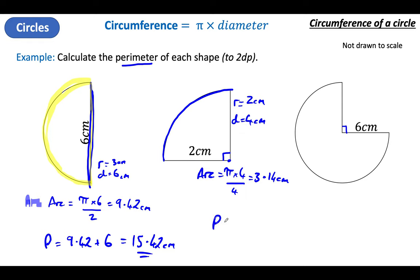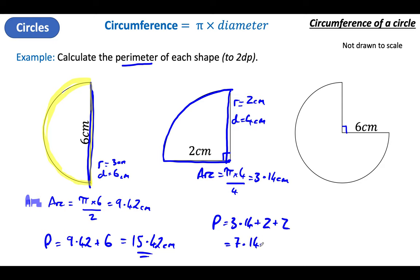My perimeter will be the arc plus the two flat bits — I need to add 2 and another 2. When I add those together, I get 7.14 centimeters. That is my perimeter — the arc and the two flat bits. I know this can be a little bit tricky, but let's try and get our heads around it.